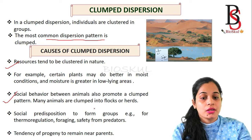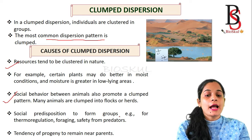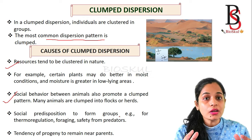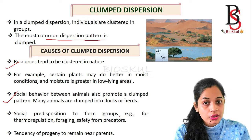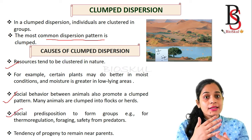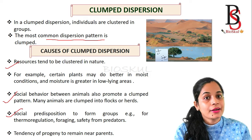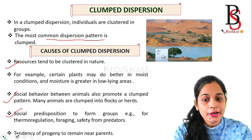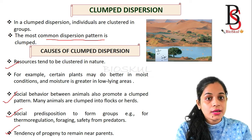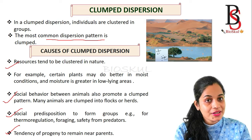Social predisposition to form groups — for example, for thermoregulation, food searching, and protection from predators — also causes animals to cluster. Additionally, the tendency of offspring to remain near parents leads to clumped dispersion patterns. So if you get a question asking which dispersion pattern is most common in a population, the answer is clumped dispersion.